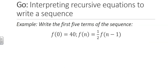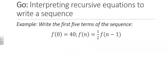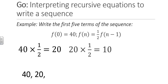Here is an example. Write the first five terms of the sequence: f(0) = 40, f(n) = ½ · f(n−1). This is a geometric sequence, so we will need to multiply each term by ½ to get the next term in the sequence. The first term, f(0), is given to us — we know it is 40. To get the next term, we multiply 40 by ½, which gives us 20. To get the third term, we multiply 20 by ½, which gives us 10. This process continues until we have the first five terms. The first five terms are 40, 20, 10, 5, and 2.5.